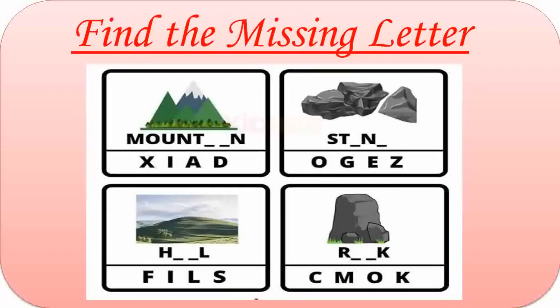First one is Mountain. Missing letters are A and I. M-O-U-N-T-A-I-N. Mountain. Second one is Stone. Missing letters are O and E. S-T-O-N-E. Stone. Third one is Hill. Missing letters are I and L. H-I-L-L. Hill. Fourth one is Rock. Missing letters are O and C. R-O-C-K. Rock.